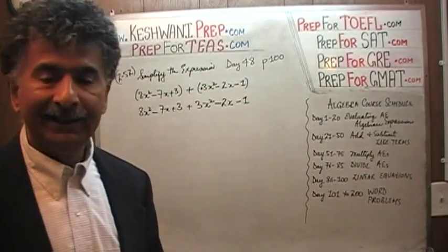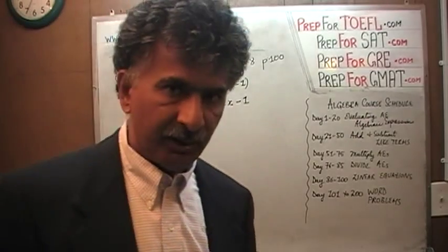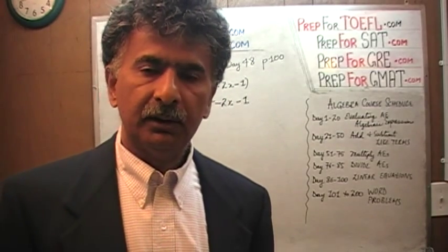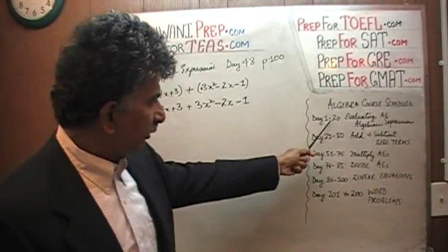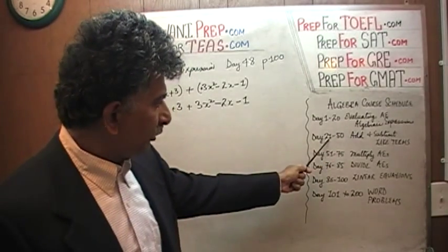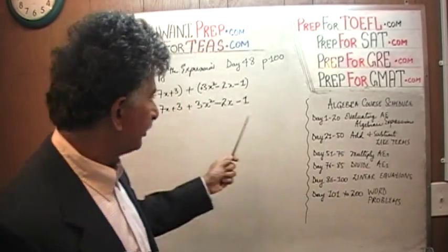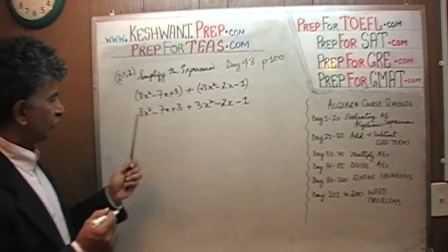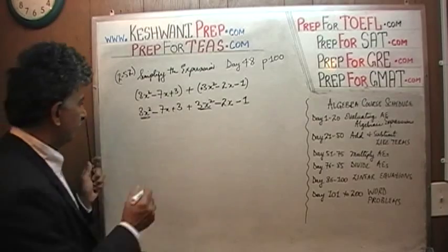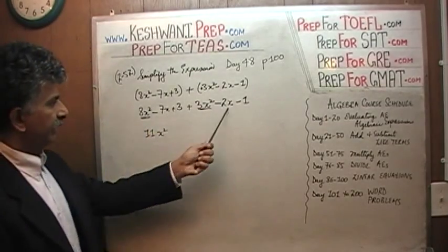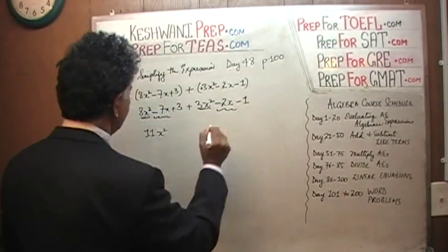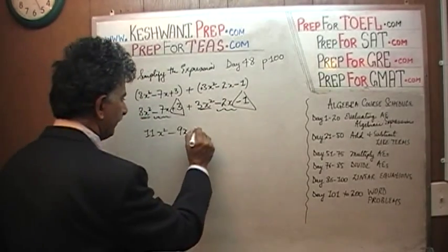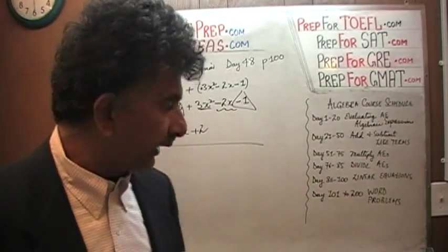Now what we have to do is what is known as adding and subtracting like terms. On my channel you will find about 200 videos dealing with different algebra concepts. Now we have to add and subtract like terms. We see x squared and x squared — those are like terms — and 8 plus 3 is 11, so we have 11x squared. Then we pick up the x terms: negative 7 and negative 2 gives us negative 9x. And finally, positive 3 and negative 1 gives us positive 2. That's our answer — 11x squared minus 9x plus 2. That is adding and subtracting like terms.